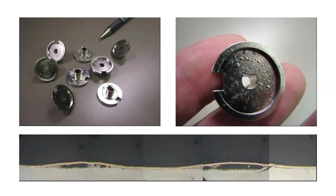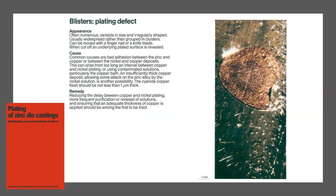Sometimes blisters are a little more difficult to diagnose, and the root cause is not always related to the quality of the die casting. In this case, blister-like defects were occurring on the plated surface. After sectioning the casting, it was clear that the blister was occurring between the zinc substrate and the plated layer. Guidance from a booklet entitled Plating of Zinc Die Castings — Identification, Cause, and Avoidance of Defects helped diagnose this defect as either blisters, plating defects, or pits due to inadequate cleaning. The cause could be bad adhesion between the zinc and copper layer, which can arise from issues in the plating process such as long plating intervals or contaminated solutions. Potential remedies are also listed.